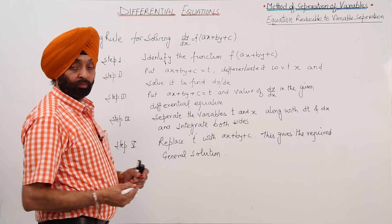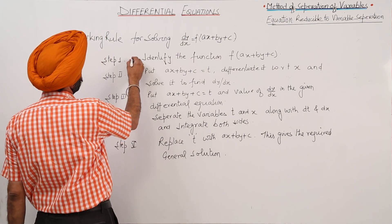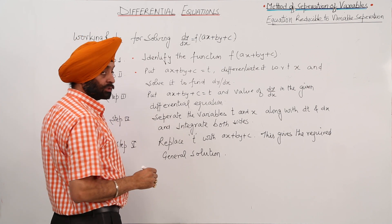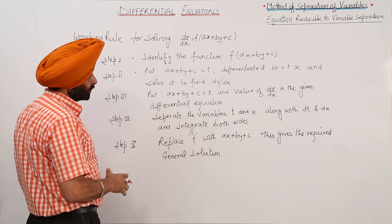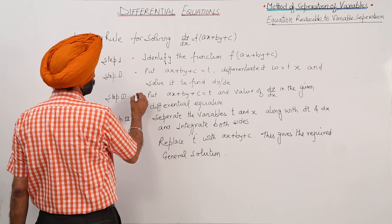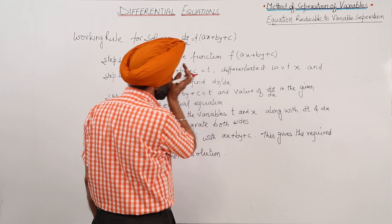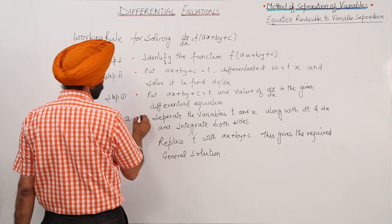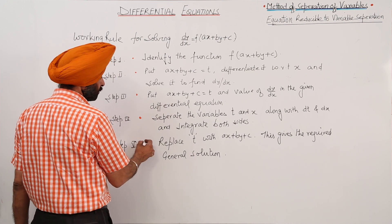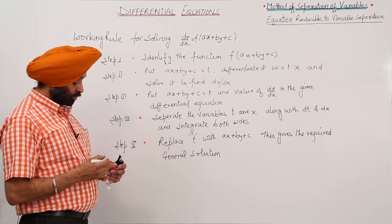These are the 5 steps. By this you can easily solve equations of this type. Step 1: Identify the function ax plus by plus c. Step 2: Put ax plus by plus c equal to t or z, whatever you wish. Differentiate with respect to x and solve for dy by dx. Step 3: Replace ax plus by plus c with t and substitute the value of dy by dx in the given differential equation. Now easily you can separate the variables. After separating the variables, integrate them, and finally put the value of t back as ax plus by plus c — that is your required general solution.